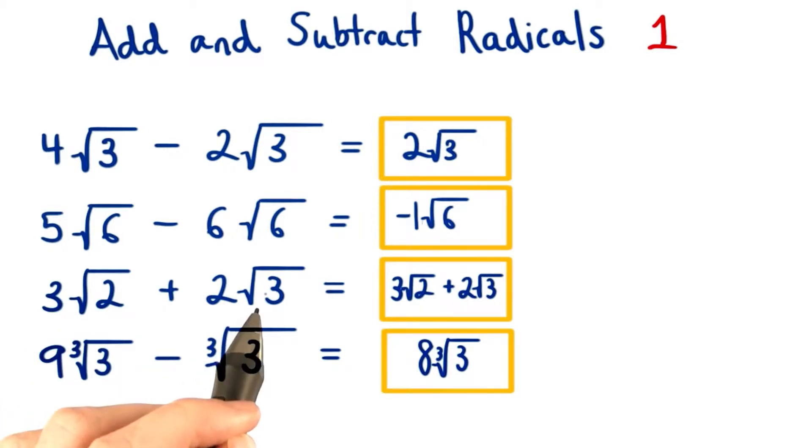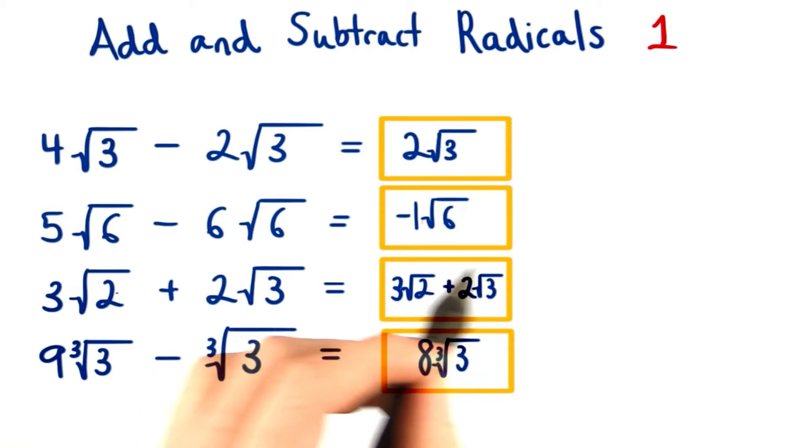For this third one, we cannot add the radicals together since the radicands are different. We do have the same index since we have a square root, but this radicand is a 2 and this one's a 3. So we leave this as is.